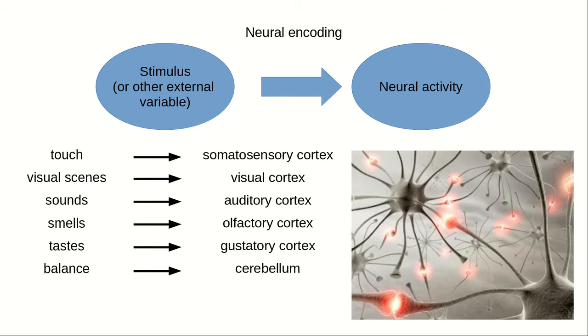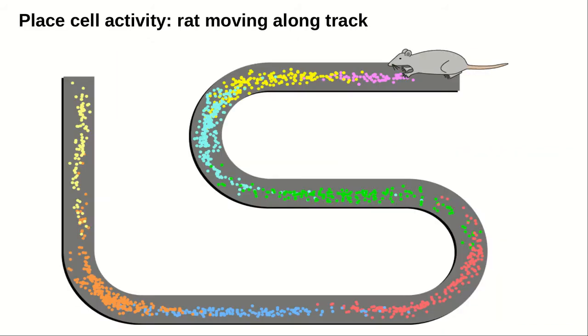The brain can encode other information besides features of a stimulus. Another variable encoded by neural activity that we can observe experimentally is location. It turns out that there are neurons in a part of the brain called the hippocampus whose activity is highly correlated with one's location in an environment. These neurons that encode location are called place cells.